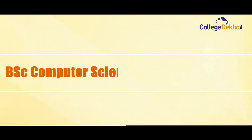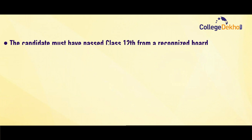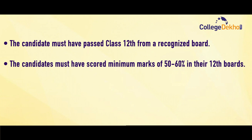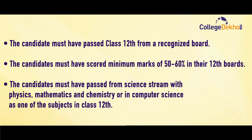Moving ahead to know the B.Sc Computer Science eligibility criteria. The candidate must have passed Class 12th from a recognized board and must have scored minimum marks of 50 to 60% in their 12th boards. The candidates must have passed from the science stream with Physics, Mathematics, and Chemistry, or with Computer Science as one of the subjects in Class 12th.